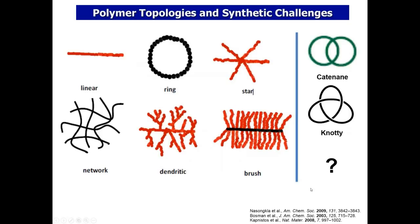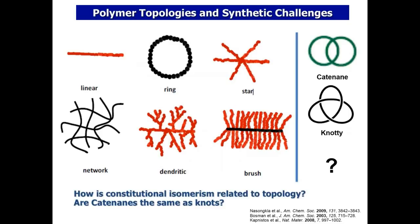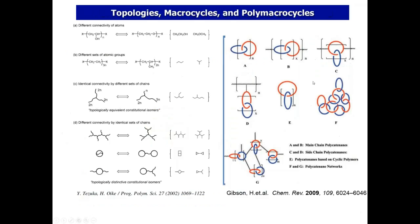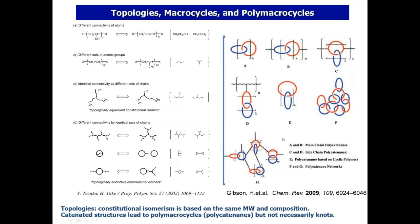Constitutional isomerism related to topology is a fascinating direction. As you can see in this viewgraph, topology, macrocycles, and polymacrocycles are the realm in which these chains can form interesting geometries or structures — different types of catenated links that enable one to form homopolymers or block copolymers with interesting chain properties and dynamics. The problem is these are very hard to obtain or synthetically challenging to produce in high yields.